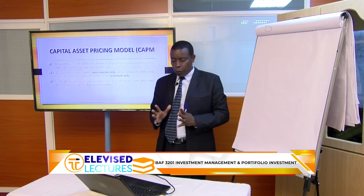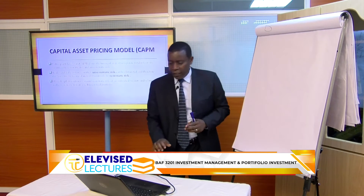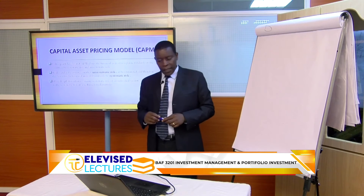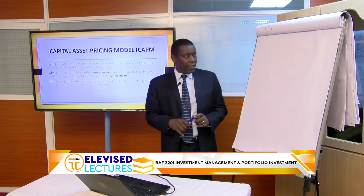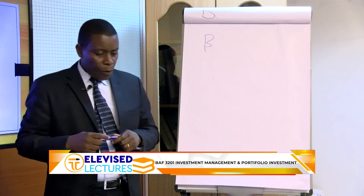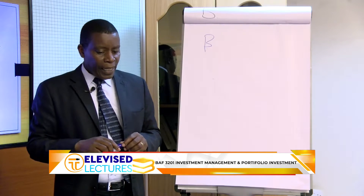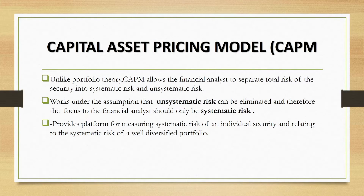So CAPM narrowed down to what we call systematic risk. Instead of measuring it by the use of standard deviation as used in the portfolio theory, they said the measure of systematic risk should be what we call the beta factor. The CAPM works under the assumption that unsystematic risk can be eliminated, and therefore the focus of the financial analyst should be systematic risk. The model brought up a framework for measuring systematic risk of an individual security and relating it to the systematic risk of a well-diversified portfolio.